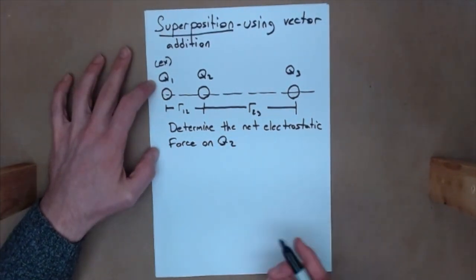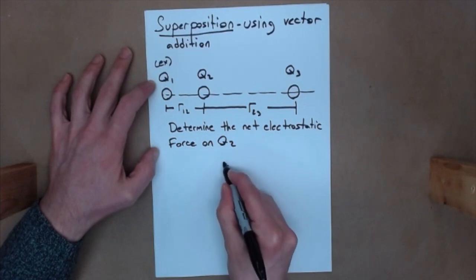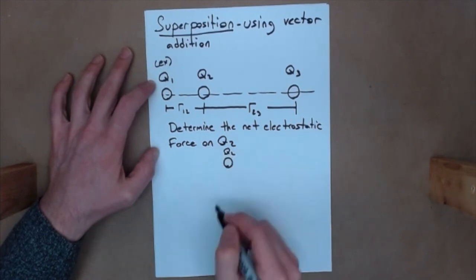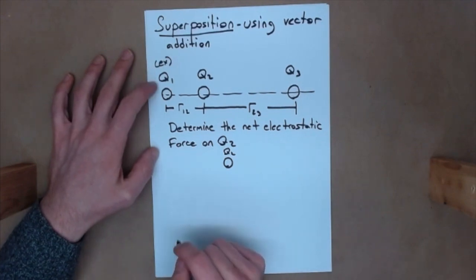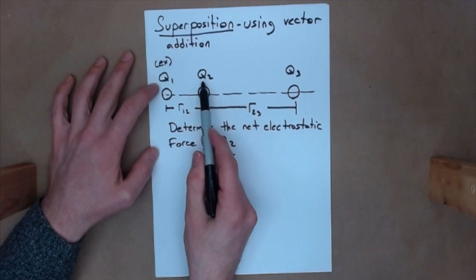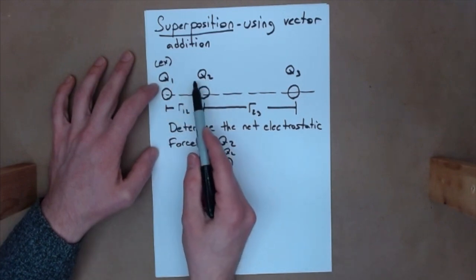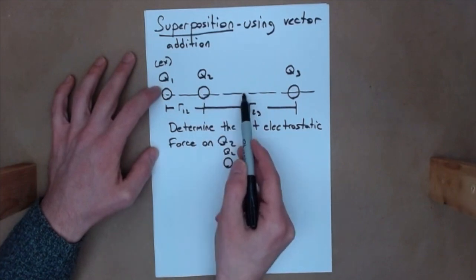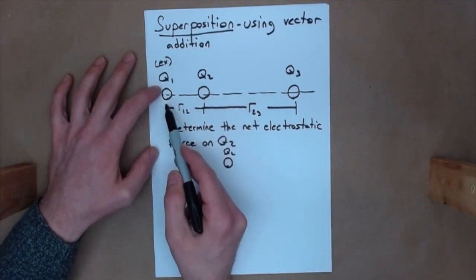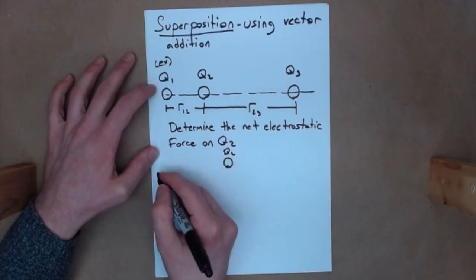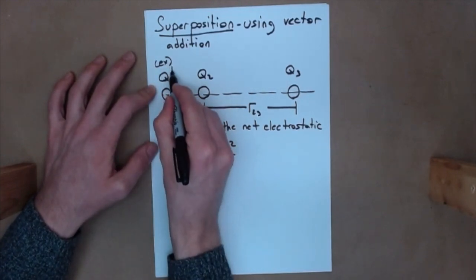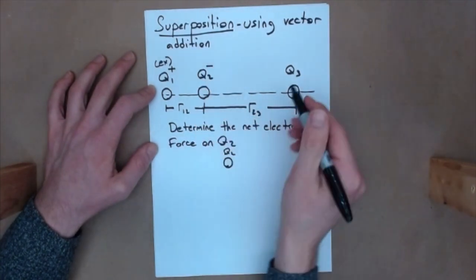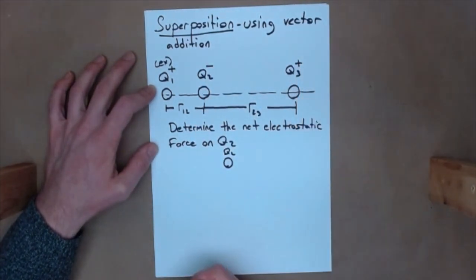Well, just like before, free body diagram. Here's Q2. Well, actually, I haven't given you enough information yet, because Q1 is going to affect Q2, assuming that they're not neutral, right? But we don't know how, because if they're the same charge, it'll be to the right. If they're opposite charges, the force on 2 would be to the left. So I need to give that information to you. Suppose that I tell you that Q1 is positive, Q2 is negative, and Q3 is positive.